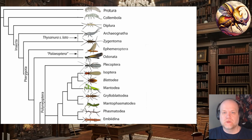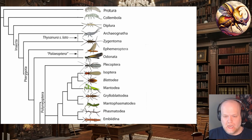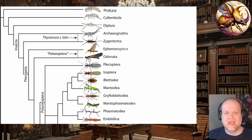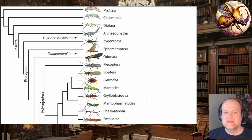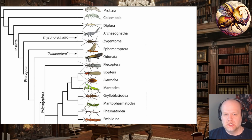I wanted to talk about another group of extinct insects called the Alienoptera, meaning 'alien wing.' This is an order of insects primarily known from the Cretaceous, starting about 100 million years ago — kind of the last era of the dinosaurs. The reason they're called the Alienoptera, the alien wings, is that there have been some problems historically placing these insects into the taxonomic hierarchy, because they share a lot of body shape characteristics with many other groups.